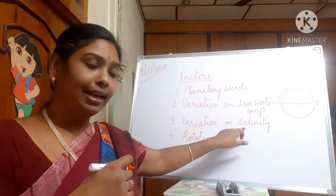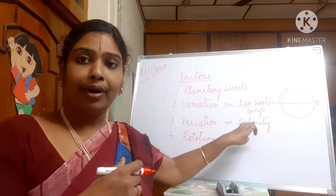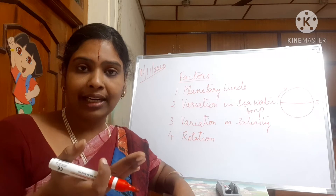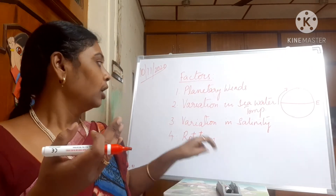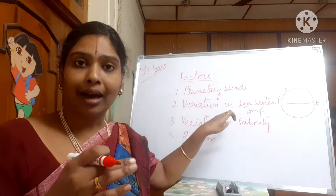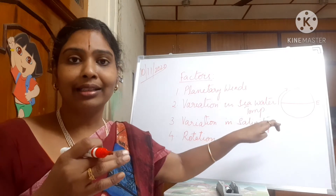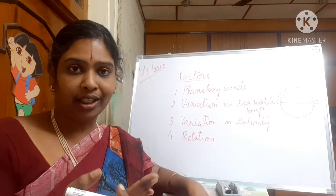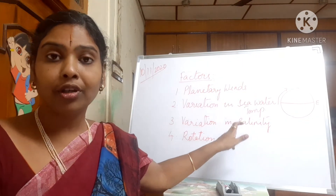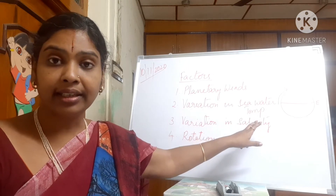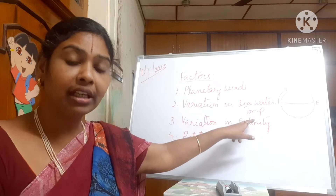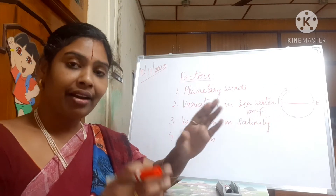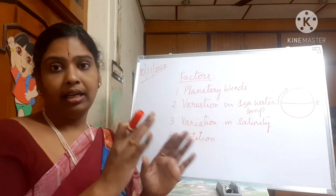The next factor is variation in salinity. Where water is less dense, ocean currents move from a less dense area to a higher density area, because higher density areas are areas of sedimentation. For example, water flows from the Atlantic Ocean towards the Mediterranean Sea — the salinity in the Atlantic Ocean is comparatively less than that of the Mediterranean Sea. Similarly in the Indian Ocean, the salinity is less compared to the Red Sea, which is near the Mediterranean Sea.